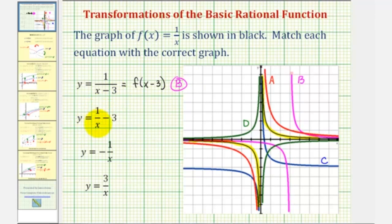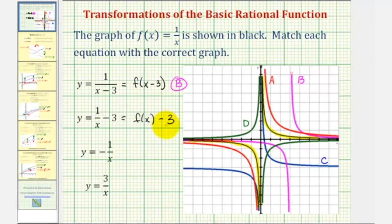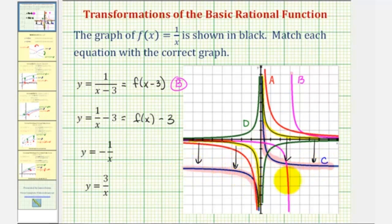Next we have y equals one divided by x minus three, which is equivalent to f of x minus three — we're subtracting three from the function values, or y values, of f of x. Because we're subtracting three from the y values, this is the graph of f of x shifted down three units. If we shift the black graph down three units, we get the graph of the blue function, or graph c.